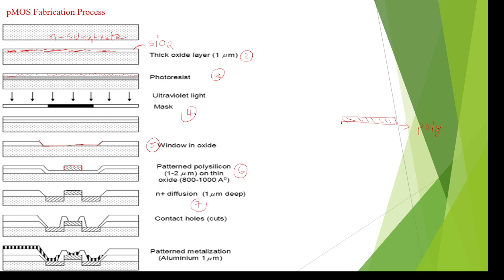In the seventh step, we design the source and drain terminals. By heating the N-substrate, we diffuse holes into the material. The areas where holes are diffused become the source and drain. The middle polysilicon region acts as the gate terminal.